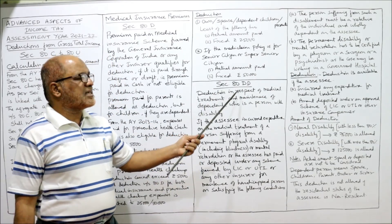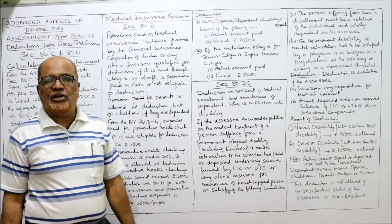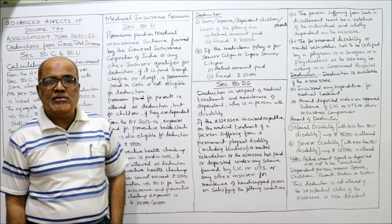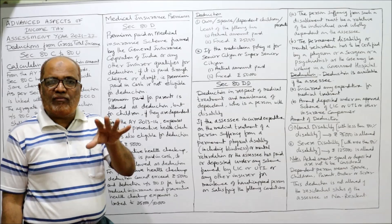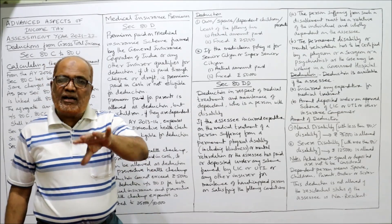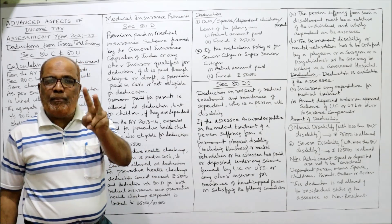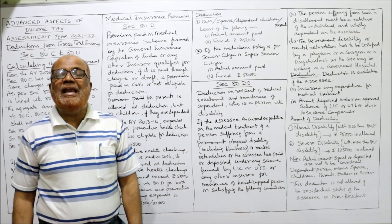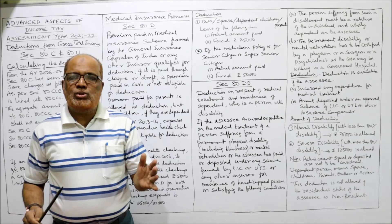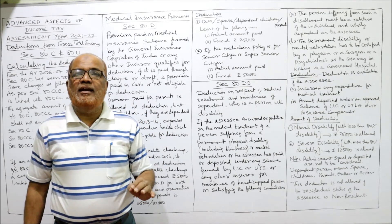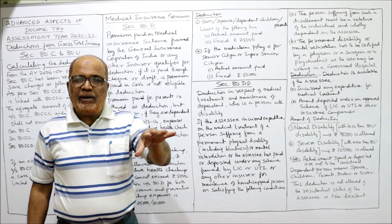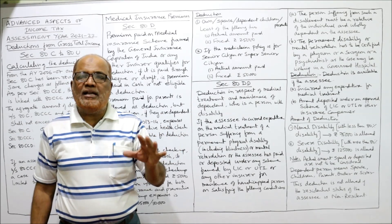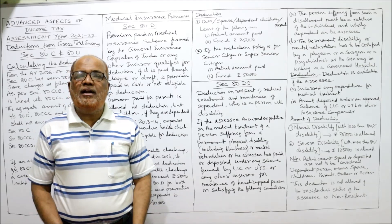Next is Section 80DD — another important deduction. This deduction is regarding medical treatment and maintenance of a dependent who is a person with disability. Suppose in the family, a person is physically or mentally disabled — the SSC has incurred some expenditure or deposited some maintenance money. Then deduction will be allowed under Section 80DD. The provisions are: if the SSC incurred expenditure on the medical treatment of a person suffering from permanent physical disability, including blindness or mental retardation, or the SSC paid or deposited under any scheme framed by LIC, UTI, or any other insurer for maintenance of such handicapped person.